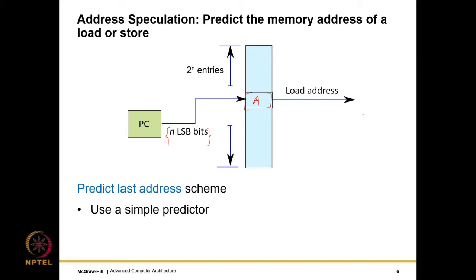This is a simple scheme where we predict the last address. Unlike branch predictors we cannot use saturating counters here because this problem is not amenable to saturated counters — it is not fundamentally a counting problem; we are storing an address. The branch predictor gives the generic structure of a predictor which can be used in many different scenarios.